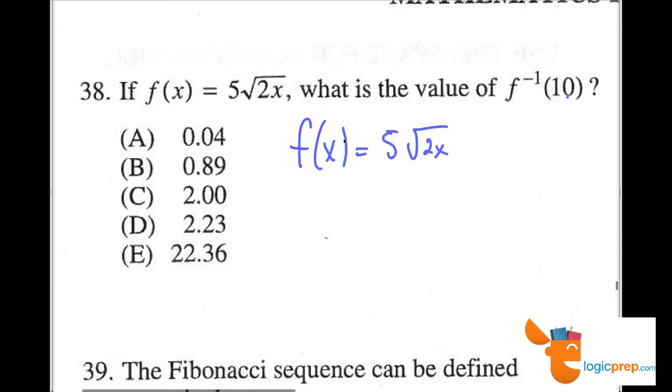Now with inverse functions, we always want to switch the x and y values. So if f of x is the same thing as y, y equals 5 square root of 2x, and now I'm going to swap x and y and say that x equals 5 square root of 2y.